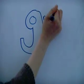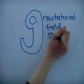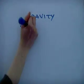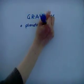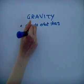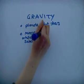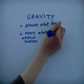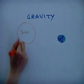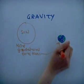Gravitational field strength is the strength of gravity on a planet or moon. It is gravitational force that causes planets to orbit a star, and moons and artificial objects to orbit planets. The greater the mass of the object, the greater the force of gravity.